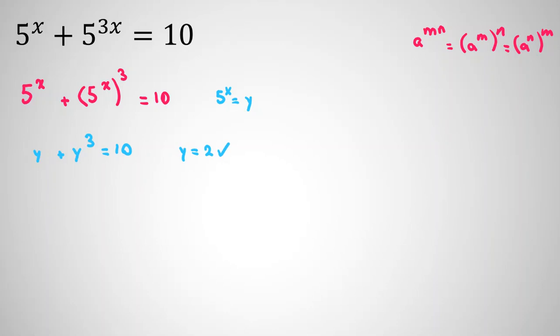because y equals 2 works, we can take all things to the left hand side. It will be y cubed plus y minus 10 equals 0. Because y equals 2 works, one factor is y minus 2.